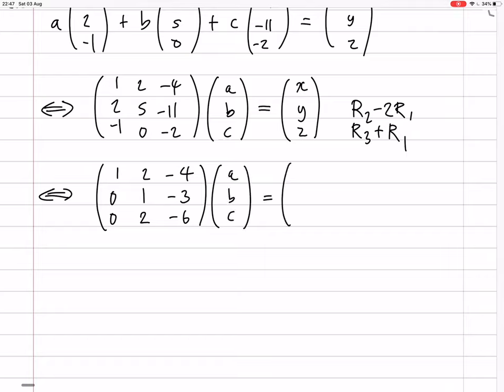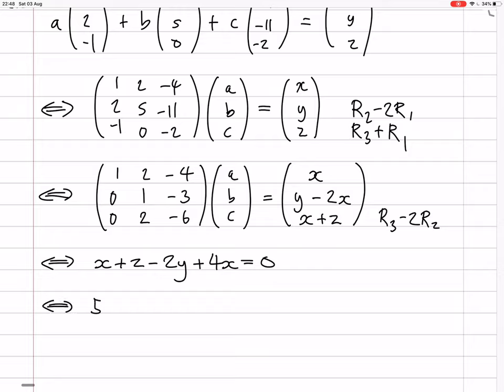So now if we do row 3 minus 2 times row 2, that'll give us a row of zeros and a Cartesian equation. It'll be saying that x plus z minus 2y plus 4x equals 0. Which is the same as 5x minus 2y plus z equals 0. That's a Cartesian equation.